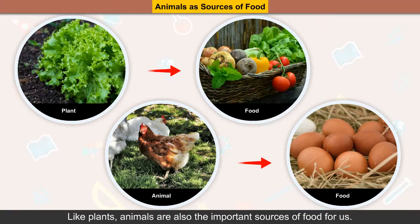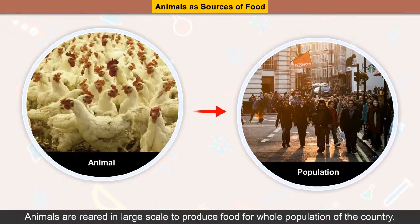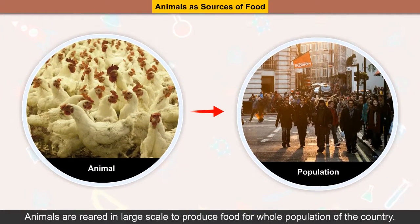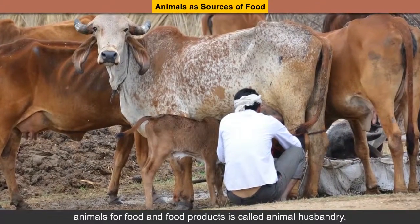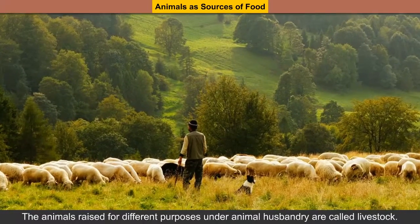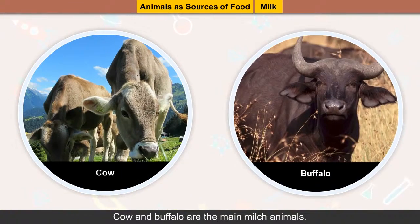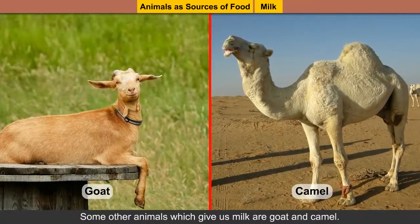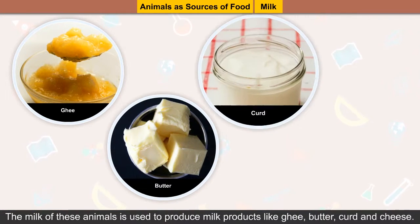Animals are sources of food: Like plants, animals are also important sources of food for us. Just like crop production, we need animals to be raised carefully to get food from them. Animals are reared on a large scale to produce food for the whole population of the country. This large-scale rearing, caring and breeding of domesticated animals for food and food products is called animal husbandry. The animals raised for different purposes under animal husbandry are called livestock. Milk: Animals which give us milk are called dairy animals or milk animals. Cow and buffalo are the main milk animals. Some other animals which give milk are goat and camel. The milk of these animals is used to produce milk products like ghee, butter, curd and cheese.